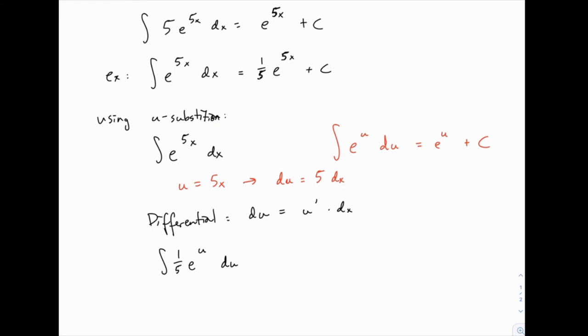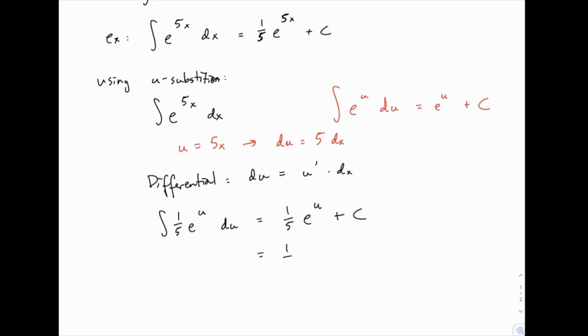And once you do that, then you can integrate this. Because now you have this basic form, which is one that we know the answer to automatically. We know that the integral of e to the u du is e to the u plus c. So our answer is going to be e to the u plus c with, of course, the 1 fifth getting carried along for the ride. But notice that we don't want the answer in terms of u. We want the answer in terms of x, just like the question was in terms of x. So we'll replace the u back with its definition in terms of x.